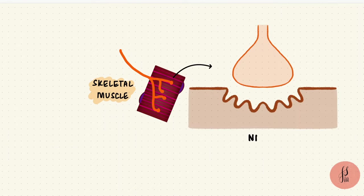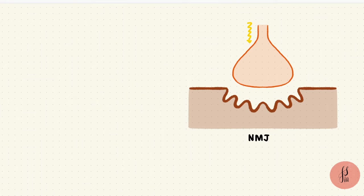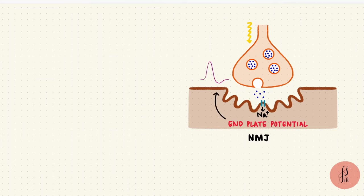It starts at the neuromuscular junction. The action potential arrives and acetylcholine is released. It acts on receptors on the muscle membrane. Sodium enters and there's generation of an end plate potential. When that reaches threshold, there's an action potential.